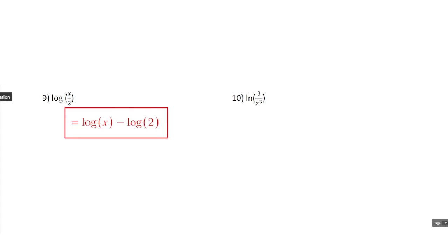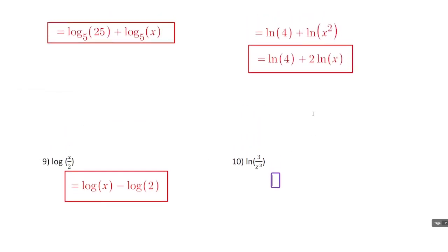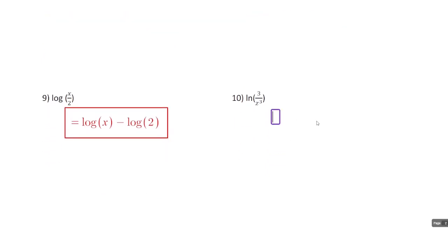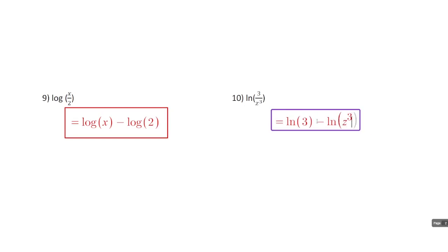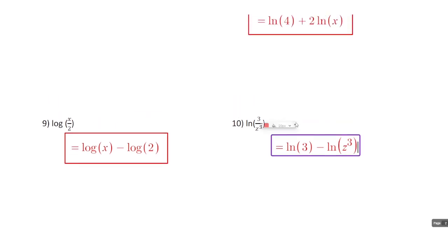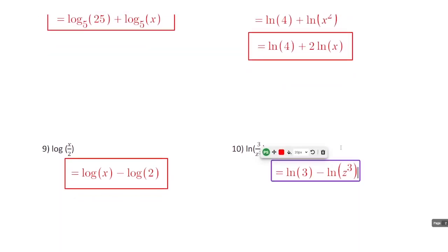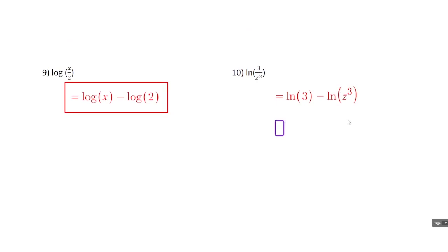For number 10 we're going to use a combination of both the quotient property and the power property, kind of like number 8. First we use the quotient property, so this equals the natural log of 3 minus the natural log of z cubed. Then just like in number 8 we use the power property to bring that exponent down as the coefficient, giving us the natural log of 3 minus 3 times the natural log of z.